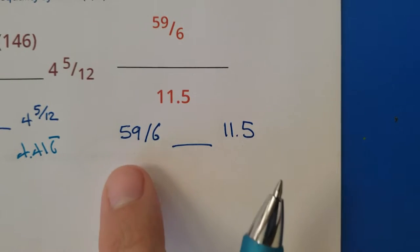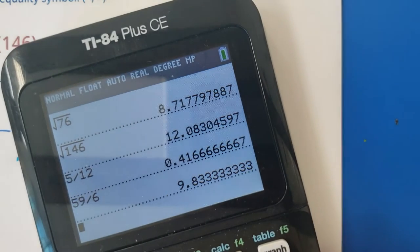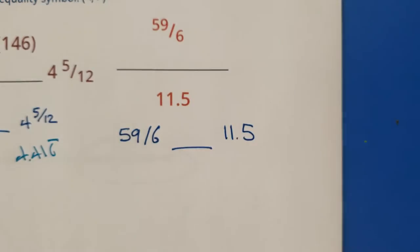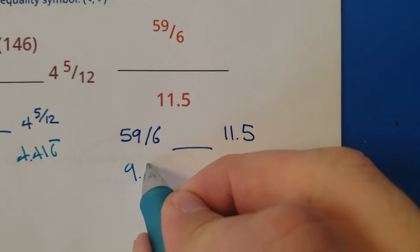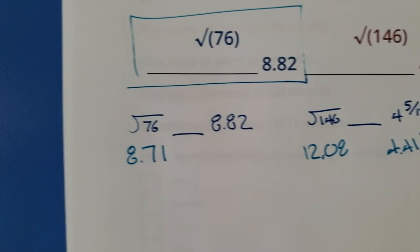Oh this one's already a decimal. That's nice. This one not so much. 59 divided by 6 is 9.83 repeating. So now I got everything converted to decimals. Let's see here.